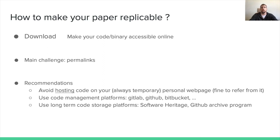Of course, even GitHub may be offline one day. Things can change over time. In order to be sure that your code will remain available in 50 years or more, you need to consider other tools such as the Software Heritage Initiative or the GitHub Archive Program, which propose a layered archival strategy with advertised lifespans of 500 years and possibly 10,000 years.